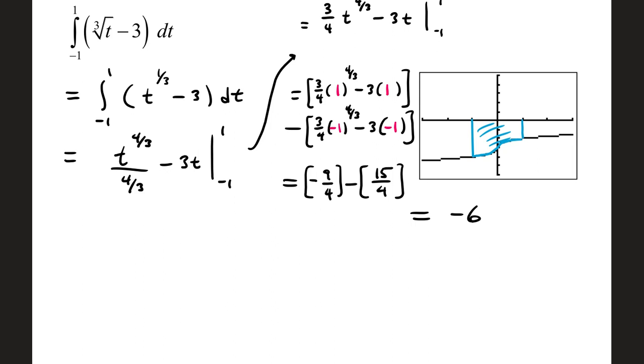So if you take the difference in the upper limit value minus the lower limit value, and I'm getting upper limit from 1, lower limit from negative 1, you get a net area of negative 6. Now for this function, the cube root of t minus 3, from negative 1 to positive 1, it's all located under the x-axis. So that means that we should expect a negative value.